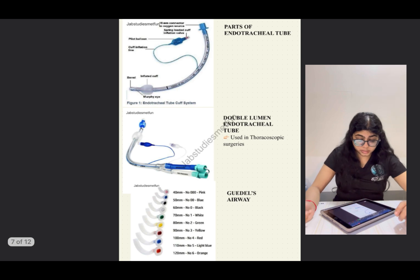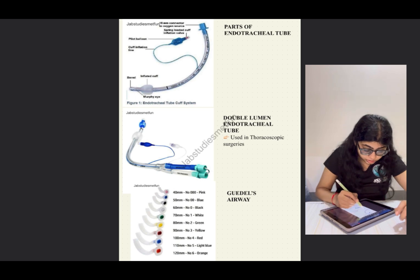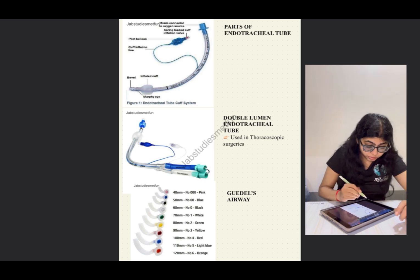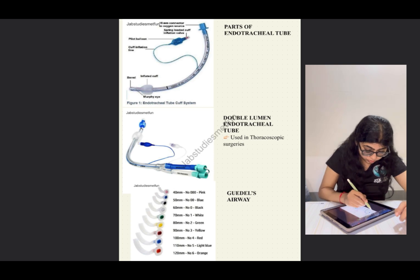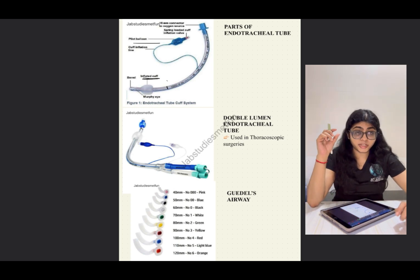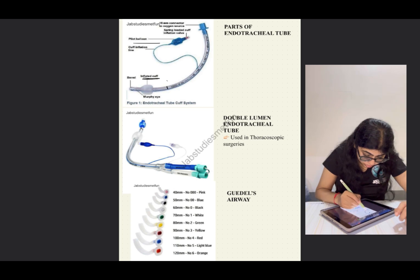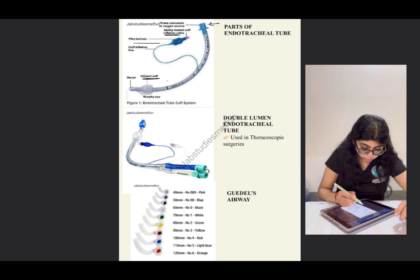The endotracheal tube has a cuff inflation wire with a pilot balloon, an inflated cuff to ensure the tube stays in place, a connector to the oxygen source, and a spring-loaded cuff in the inflation valve. You should remember how it looks.